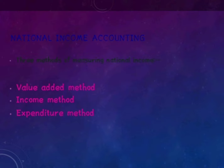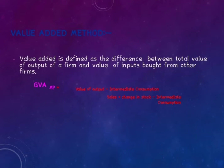There are three methods of measuring National Income: Value Added Method, Income Method, and Expenditure Method. The Value Added Method defines value added as the difference between the total value of output of a firm and the value of input bought from other firms. GDP is equal to value of output...